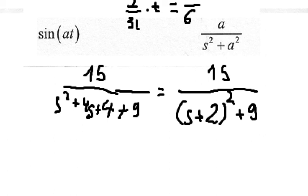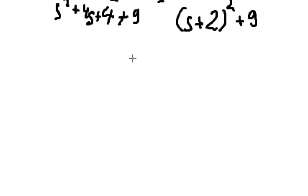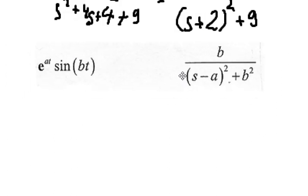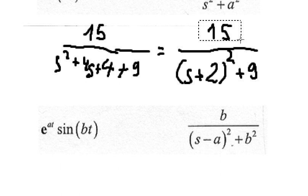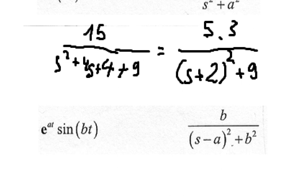In this situation we have another formula. If we look carefully, formula number nine is about b over (s minus a) squared plus b squared. We have a negative two for a. We don't have b directly, but b equals three because three squared is nine. And we note that formula 15 is five multiplied by formula three.